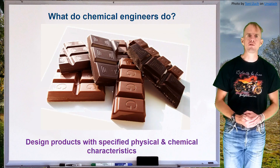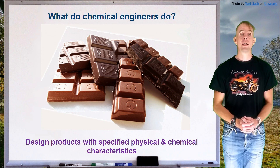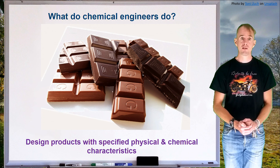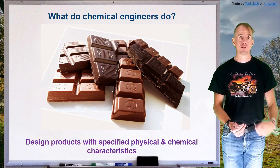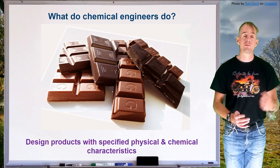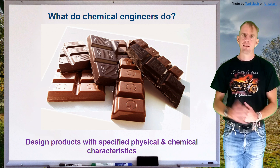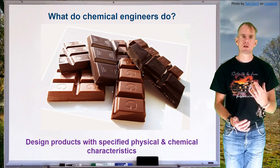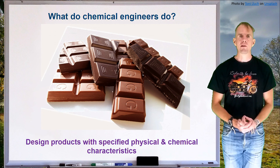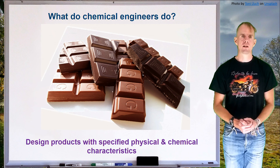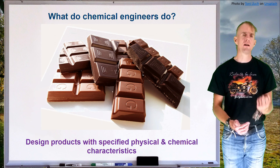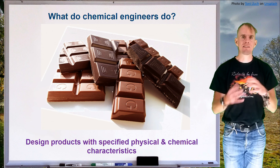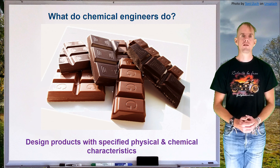Chemical engineers also design products. Here on the board is chocolate — a particularly popular product from the process industries. Chocolate is fabricated in manufacturing facilities where the principles of heat transfer, mass transfer, mixing, and fluid dynamics apply just as much as in oil refining. The goal is to design this confectionery product with the correct characteristics, which comes down to the crystal structure of the cocoa butter fat phase. The chocolate we love to eat has crystal form five in cocoa butter. When chocolate blooms, crystal form five changes to crystal form six — chemically identical but physically different. Chemical engineers must understand how to manipulate and tailor that crystal structure to achieve the desired product characteristics.